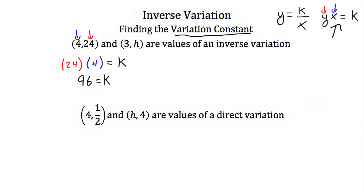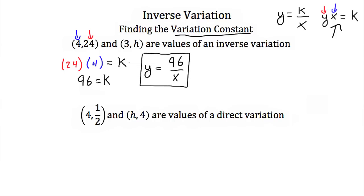4 times 24 is 96, so we have k is equal to 96. Our inverse variation equation then would be y is equal to 96 over x. Now that we have our equation, we can use it to solve for h, our second point, which is (3, h).